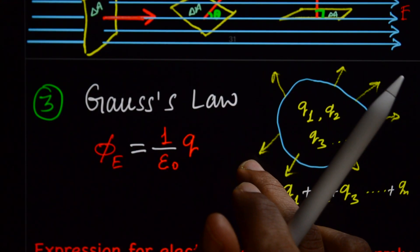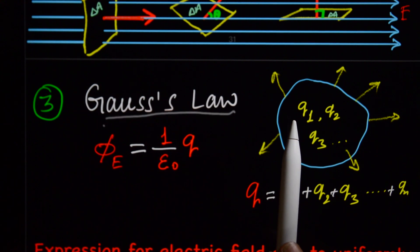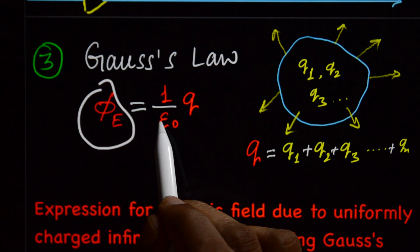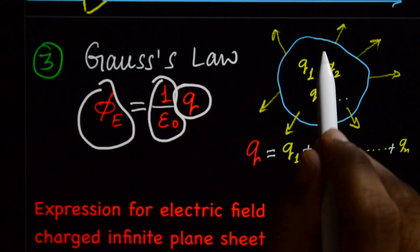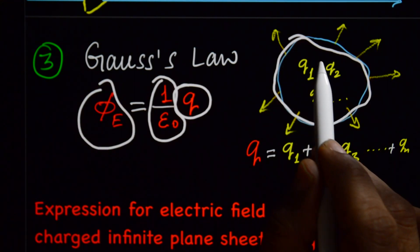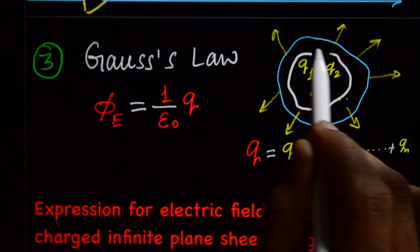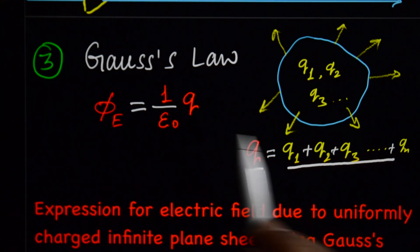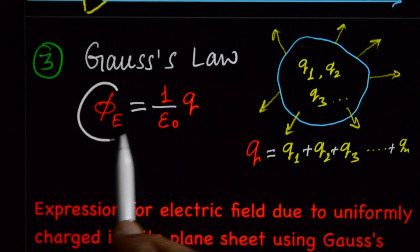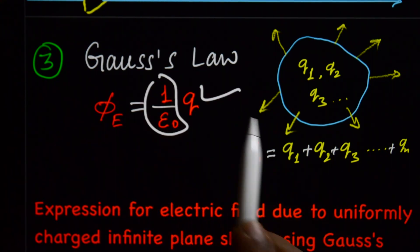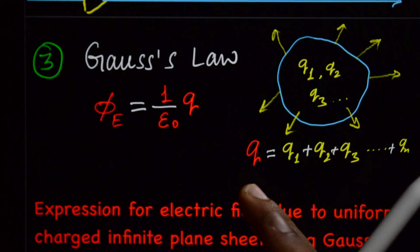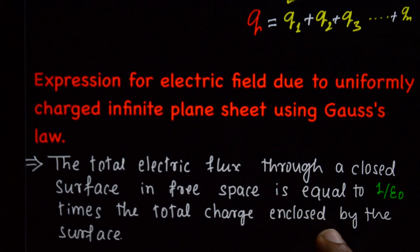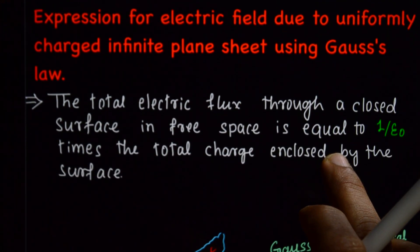Next you should know Gauss's Law. Gauss's Law says that the electric flux is equal to 1 by epsilon naught times the total charge enclosed. Suppose this is a Gaussian surface, and the charges enclosed are q1, q2, q3, etc. The total charge Q equals q1 plus q2 plus q3. According to Gauss's Law, flux through any closed surface equals 1 by epsilon naught times the total charge enclosed. Knowing these things, we can easily derive the expression for electric field due to an infinitely charged plane sheet.